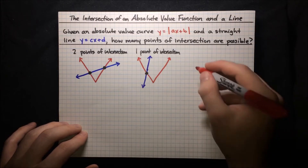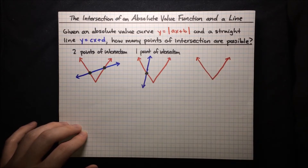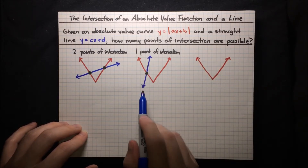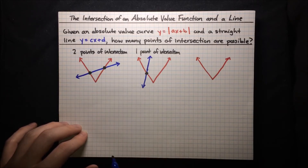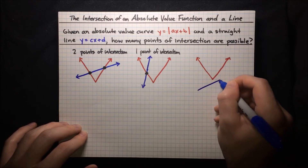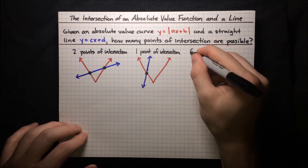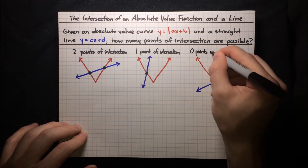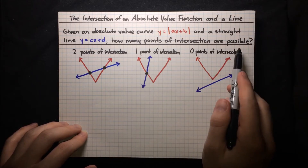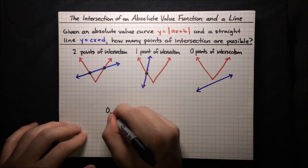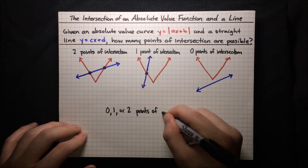But hold on, there's still one more case. Let's draw another V here. Can we orient this line any differently so that we get a different number of points of intersection? What if the line just goes like this — it doesn't even run into the V, it doesn't even intercept the V. So that would correspond to zero points of intersection. So how many points of intersection are possible? Well, there's either zero, one, or two points of intersection.